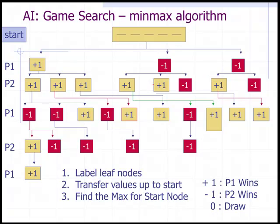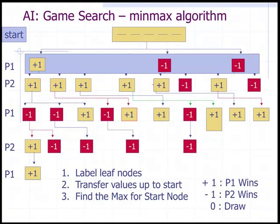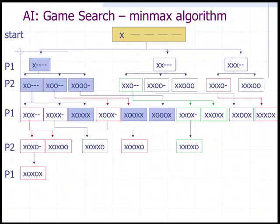Finally, we go back to the start and we have three possibilities: plus one, negative one, and negative one. Since player one wants to maximize, the choice is plus one — that is the move to make. The move is to put one X in the first spot, and you guarantee victory. That ends our lecture on artificial intelligence.